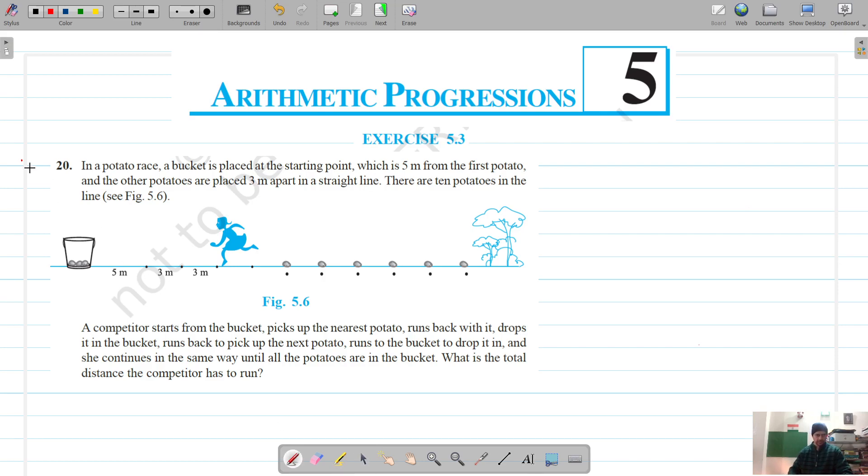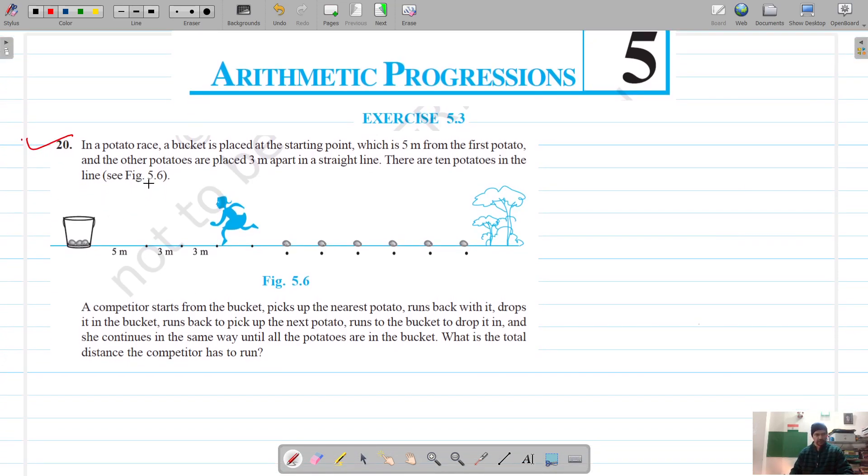Next question is question number 20. For question number 20, there is a potato race. A bucket is placed at the starting point which is 5 meters from the first potato. The other potatoes are at a distance - this is the first potato, this is the second, this is the third.